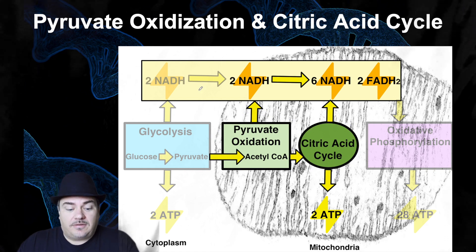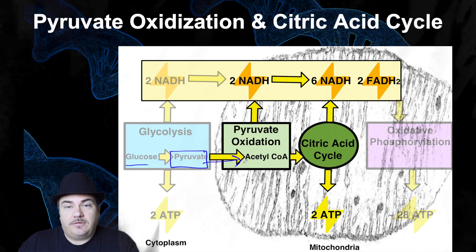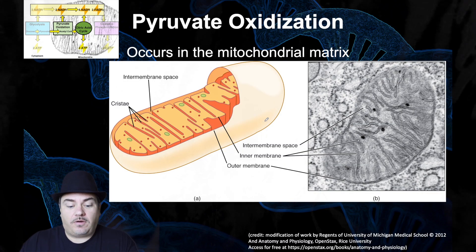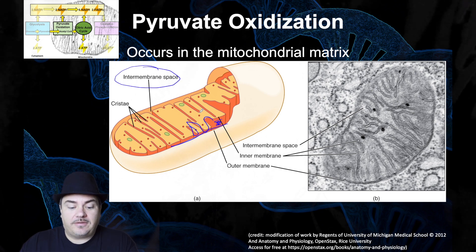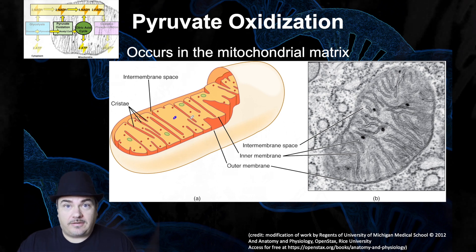At the end of glycolysis, that one glucose molecule had been converted into two molecules of pyruvate — that happened inside the cytoplasm or cytosol. The pyruvate then enters into the mitochondria, specifically into the matrix. Recall the mitochondria has two membranes: an outer membrane and an inner membrane which folds on itself. The space between them is called the intermembrane space, and the space inside the inner membrane is called the matrix. So the pyruvate molecules enter into the matrix, and that's where pyruvate oxidation is going to happen.